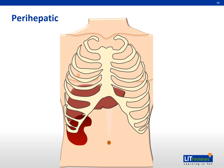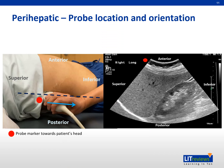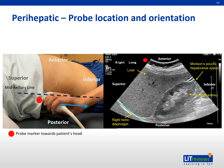Starting the FAST scan with the perihepatic region: begin in a longitudinal view with the probe marker directed towards the patient's head. Place the probe at the level of the patient's nipple along the mid-axillary line. Move the probe inferiorly until you see the liver and right kidney. Look for Morrison's pouch, which is a potential space between the liver and the right kidney.